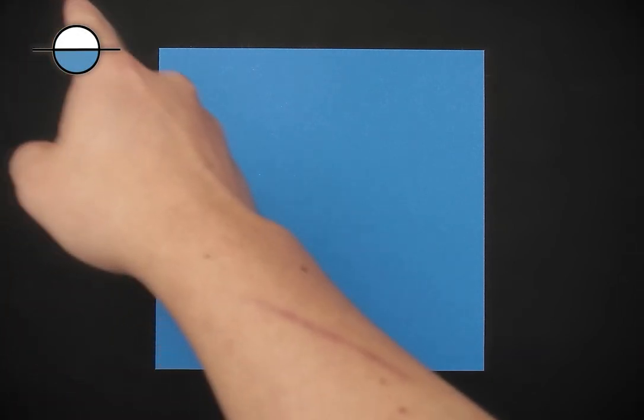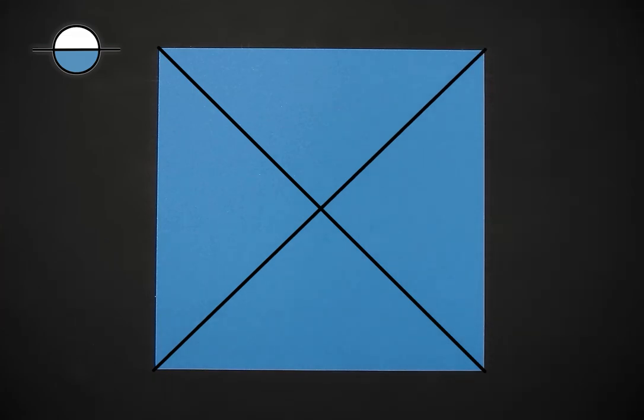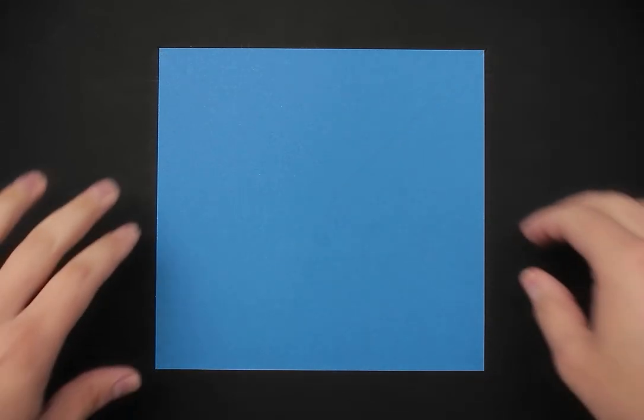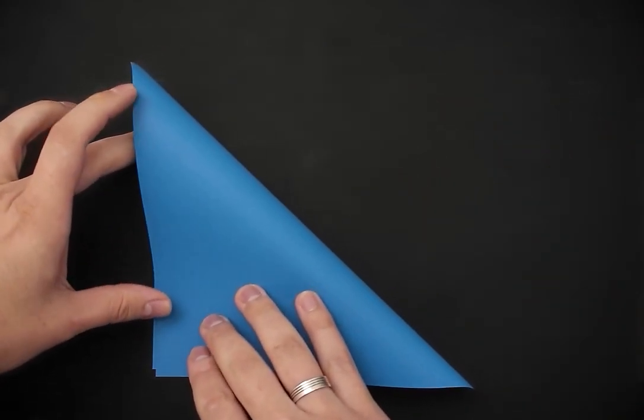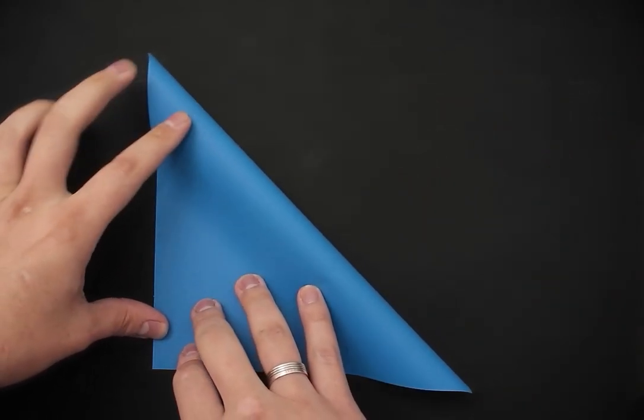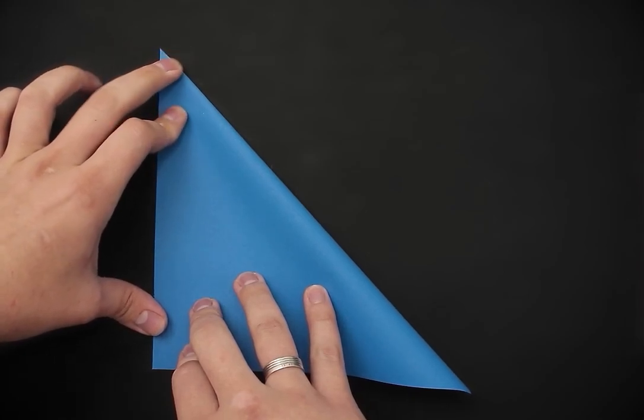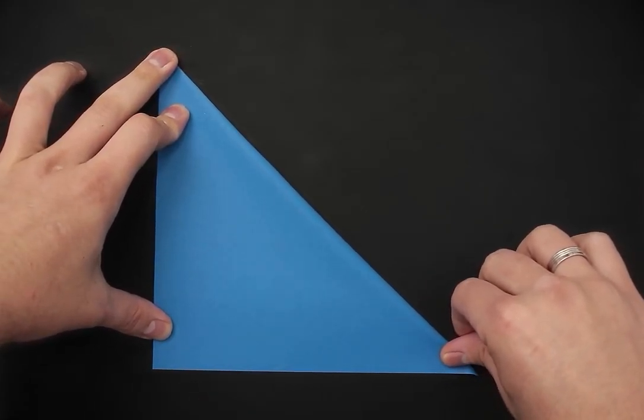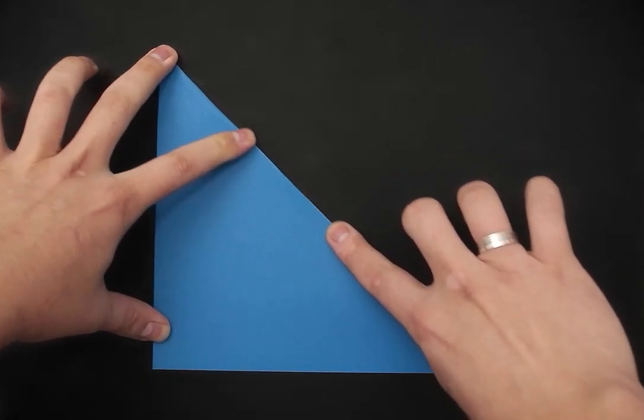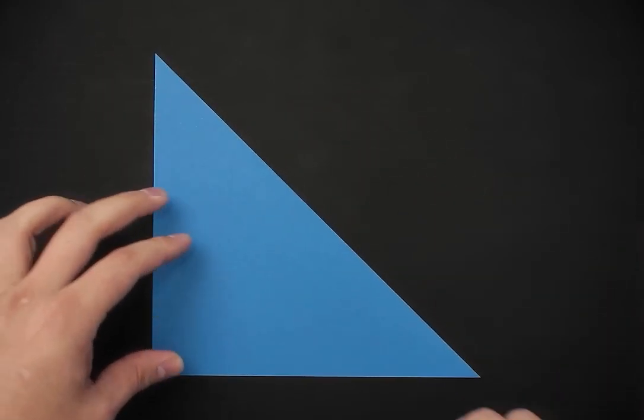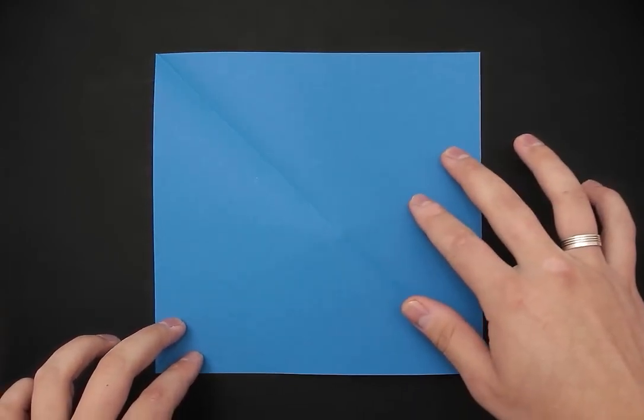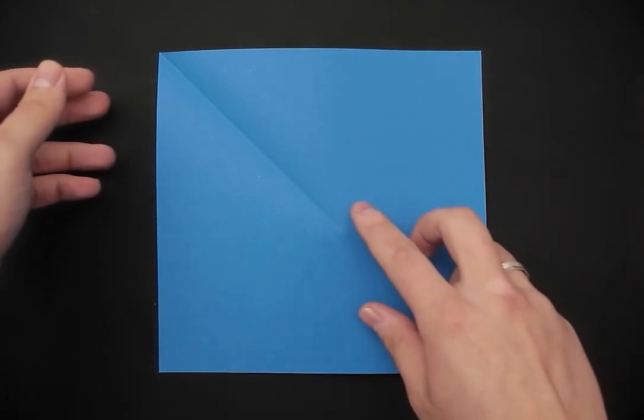To make the first piece, our first step is to fold the paper in half along both diagonals. So let's bring one corner to the other, reinforce very well, then unfold, and now fold the opposite diagonal.